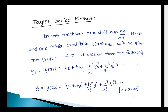This is the formula for calculating y₁. Next, y₂ = y(x₂) = y₁ + h·y₁' + (h²/2!)·y₁'' + (h³/3!)·y₁''' + and so on. Here h = x₁ - x₀.